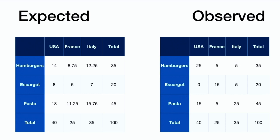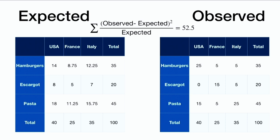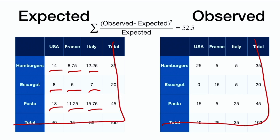Now we have our expected data and our observed data, and we see things don't quite match up. We expected eight escargot-loving Americans but there were zero in our real data. We only expected 14 people in the US to like hamburgers, but there were 25 — much more than expected. And we only expected 15.75 pasta lovers in Italy, but there were really 25. We're going to compute a chi-squared statistic by summing up (observed minus expected) squared over expected for all nine numbers in the interior of the table. The first number is (25 minus 14) squared over 14, and when we add up all nine terms we get 52.5.